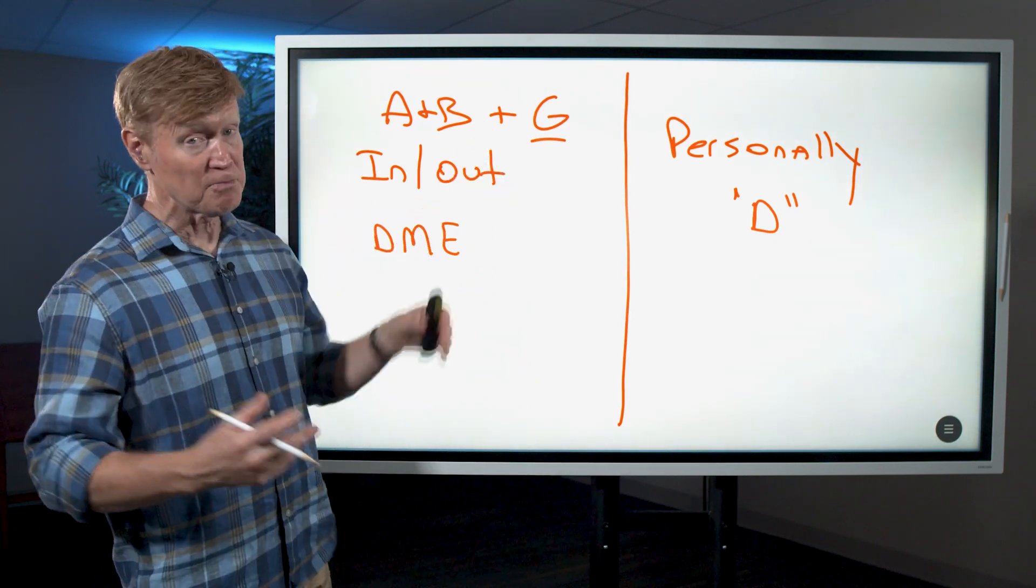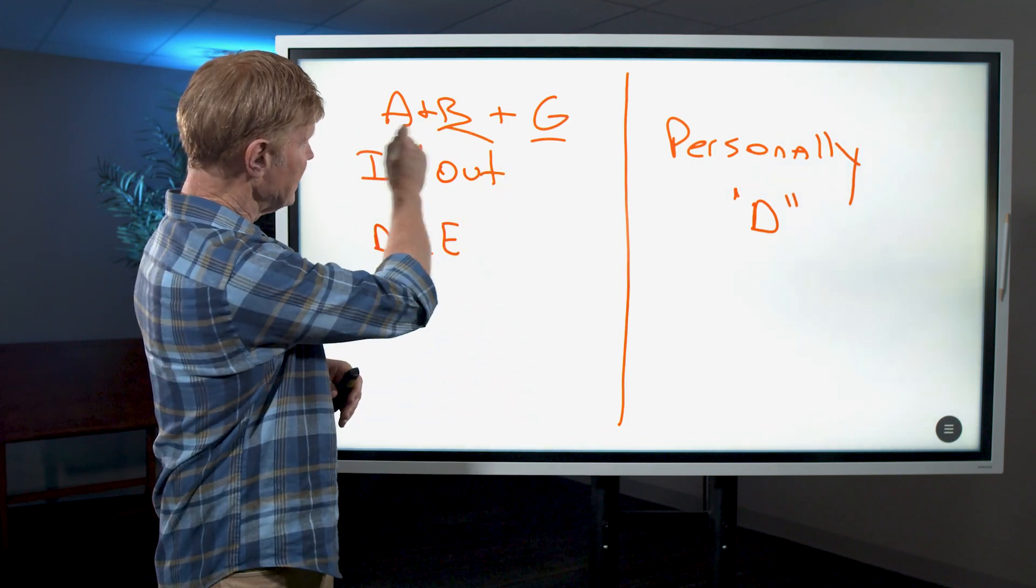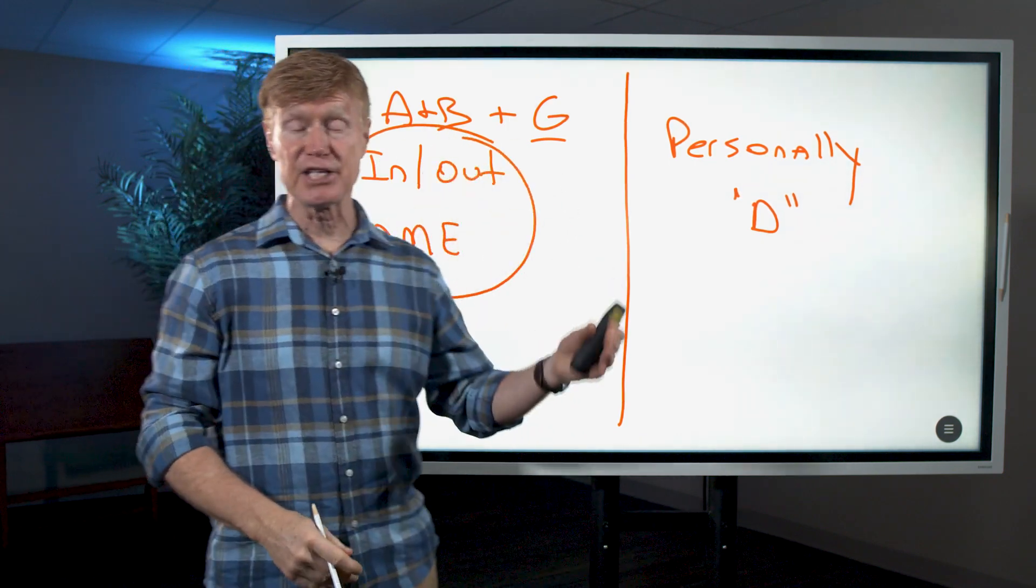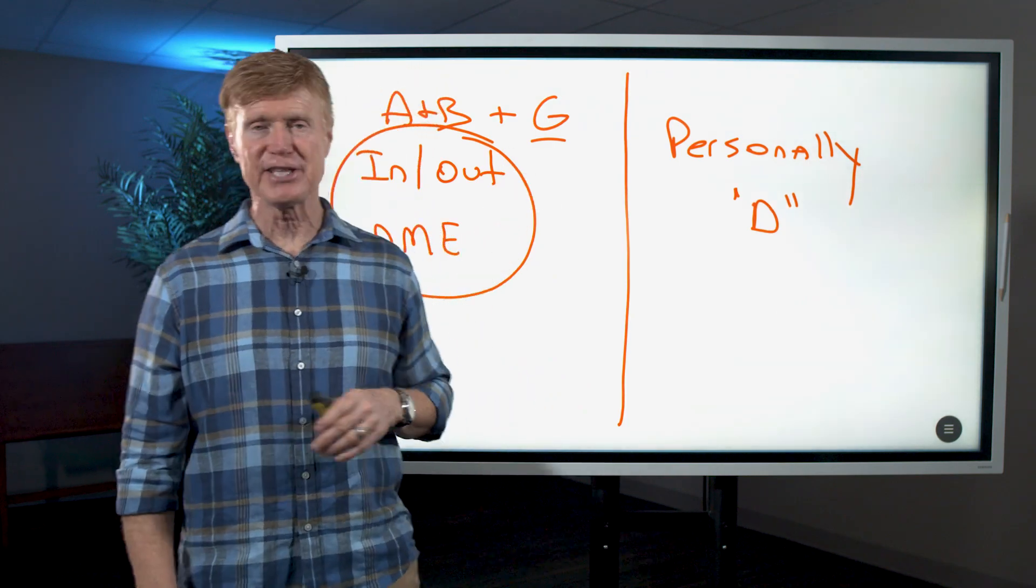So that plan G, other than that small B deductible once a year - this year it's $233 - it's going to cover the gap. So Medicare pays first, but the G plan is going to pick up the remaining expenses other than the B deductible.